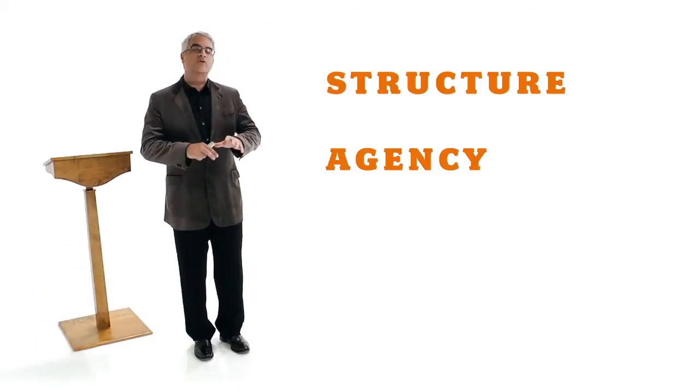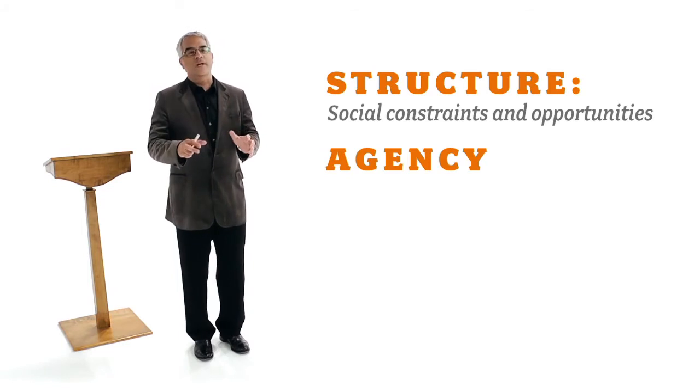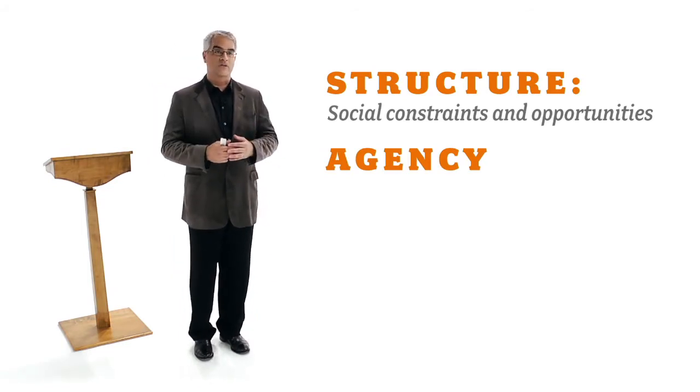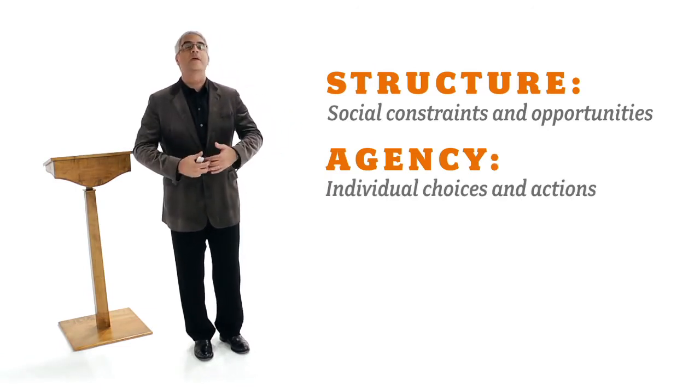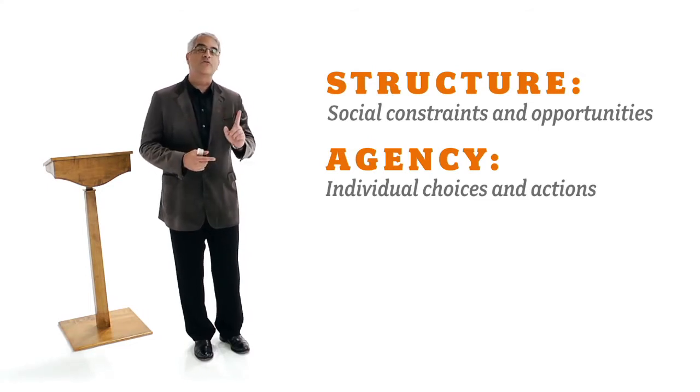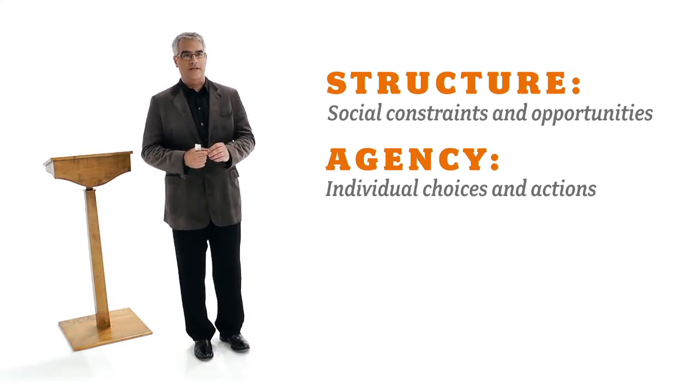This is the difference between structure and agency—between collective constraints and opportunities that constrain and permit you to do certain kinds of things in your life on the one hand, and your own individual choices and actions that permit you to do other sorts of things on the other hand. That's the first big idea I'd like to communicate today.